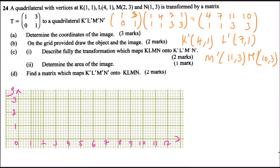Now I'll plot the coordinates of the object. K is at (1,1), so that is where we place K. L is at (4,1), so we place L there. M is at (2,3), so that is where M goes. N is at (1,3), that is N. We then join the four points to form the quadrilateral — that is the object.